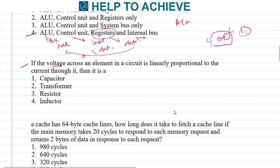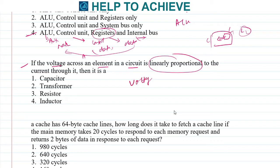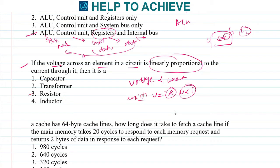Next: if the voltage across an element in a circuit is linearly proportional to the current through it, what element is it? We know that V = IR, where R is fixed, so V is proportional to I. This is the basic property of a resistor, so the correct answer is resistor.